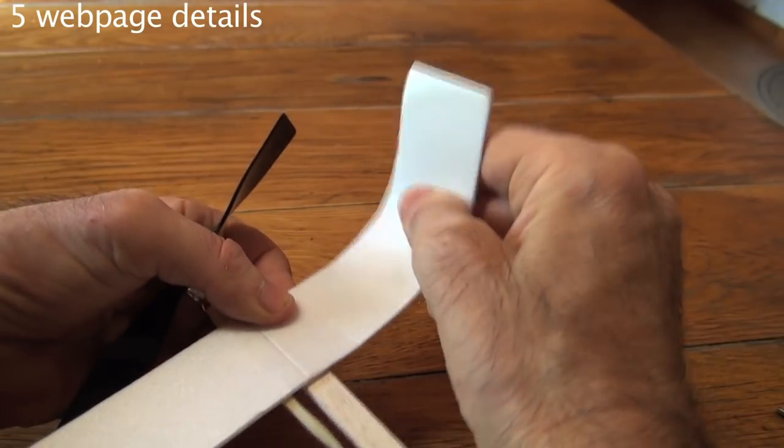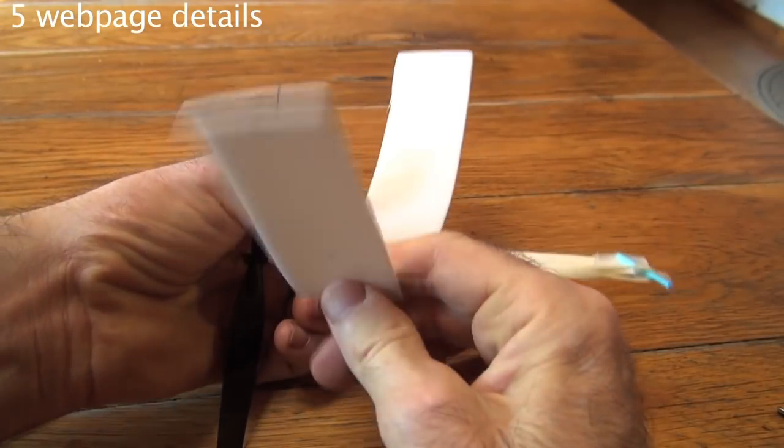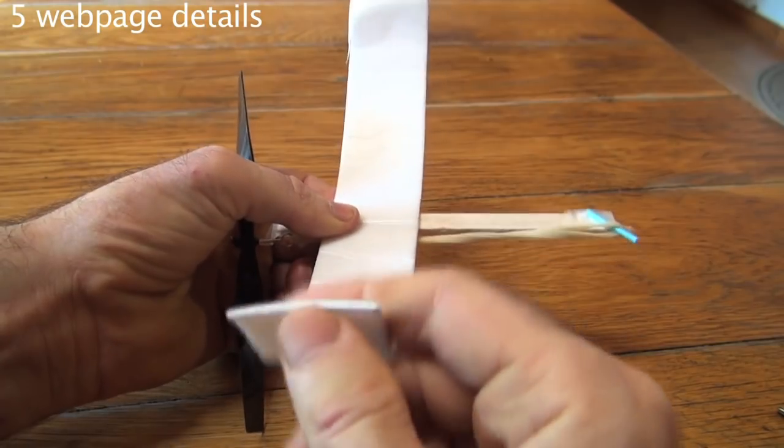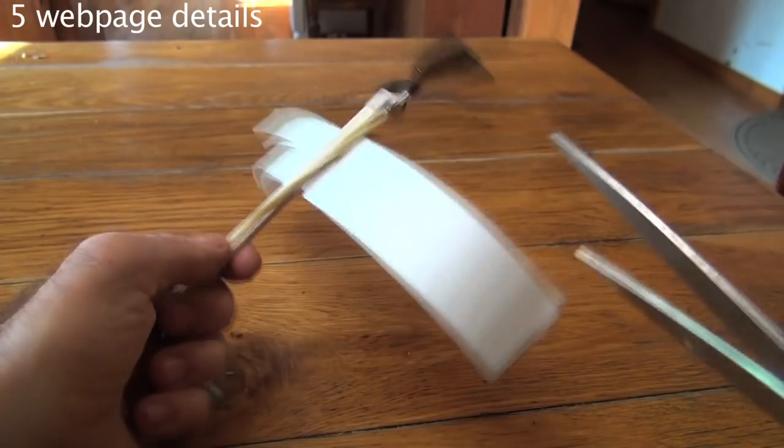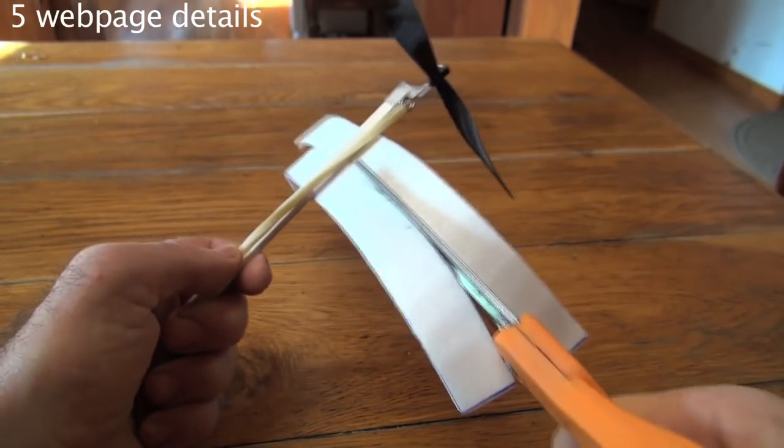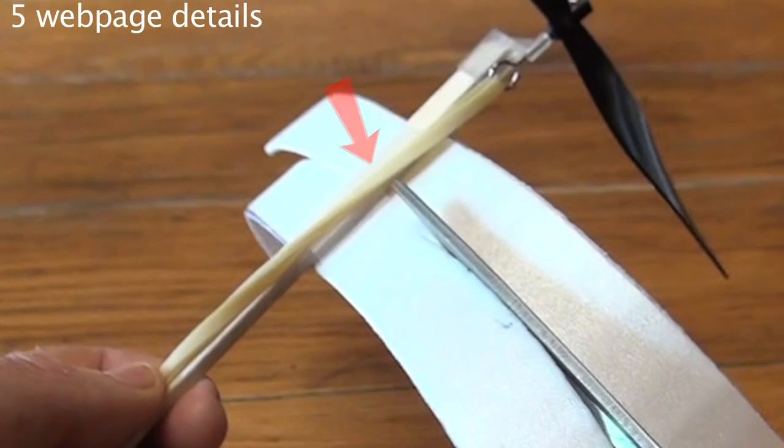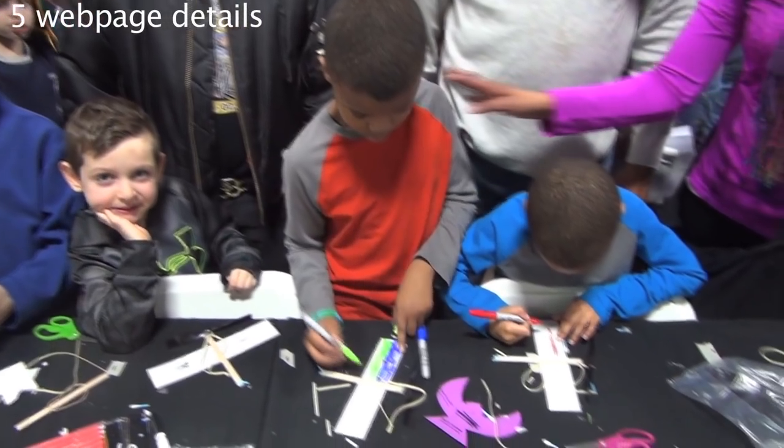It's optional to curve the wings up, which is called dihedral. It makes the flying more stable. Splitting the wings to look more like dragonflies does not affect the flight. Be careful not to cut the rubber band. You can decorate if you want to.